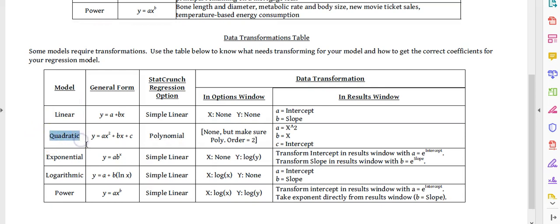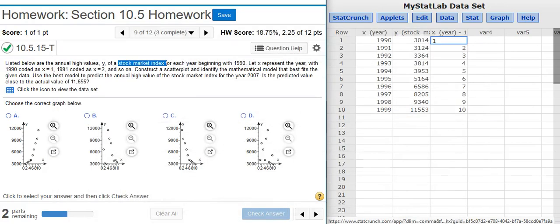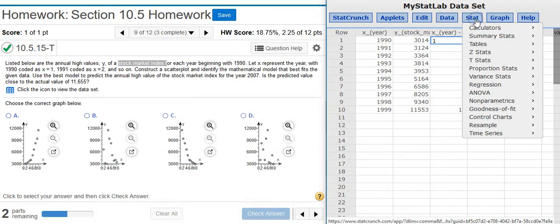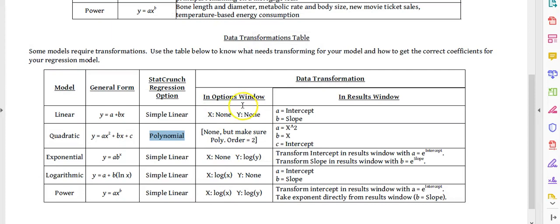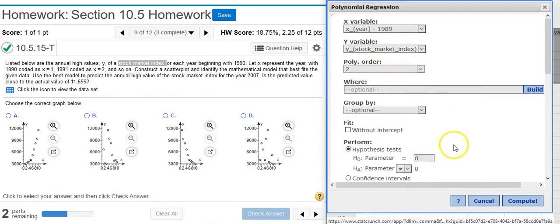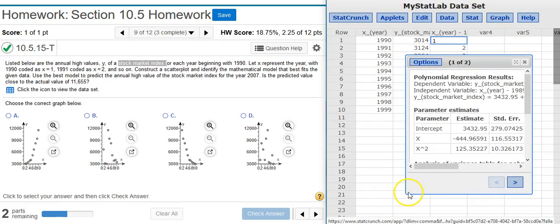Now I go down to the second table, which is the data transformation table. This tells me how to use StatCrunch to get the answers I need to put in my answer field. So again, we're making the quadratic model. Here's the general form that we want to use. To get there in StatCrunch, this is the regression option that we want to select, polynomial. So in StatCrunch, I'm going to go up to stat regression, polynomial, because that's what the table told me to select. And here I'm going to select my x and y variables. Remember to use the coded years for your x. Take the y. Poly order here is 2. That's what the table here is telling me to say. It says make sure that poly order equals 2. And we see that it does. So we've got everything we need. Hit compute. And now comes our results window.